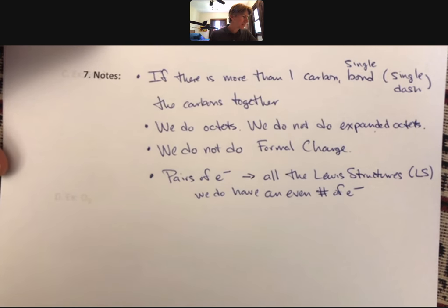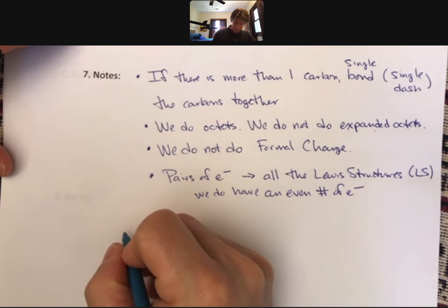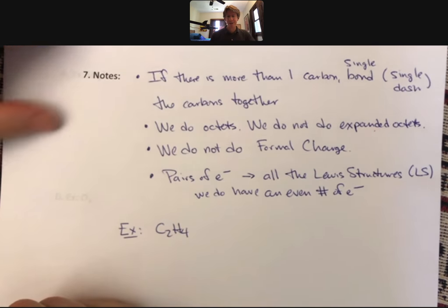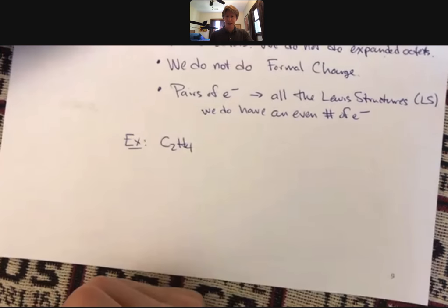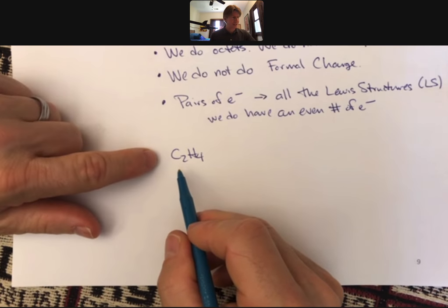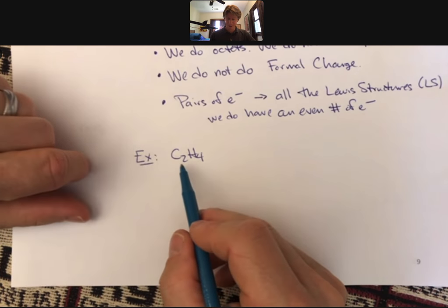And the octet rule rules so much of what we're going to be doing today. And in the future, and for the rest of the course, really. Let's do one more example on this page. Since I have some space. We're going to do C2H4. Our process looks something like this, remember. Count up the total number of valence electrons from the periodic table. Each carbon has four.